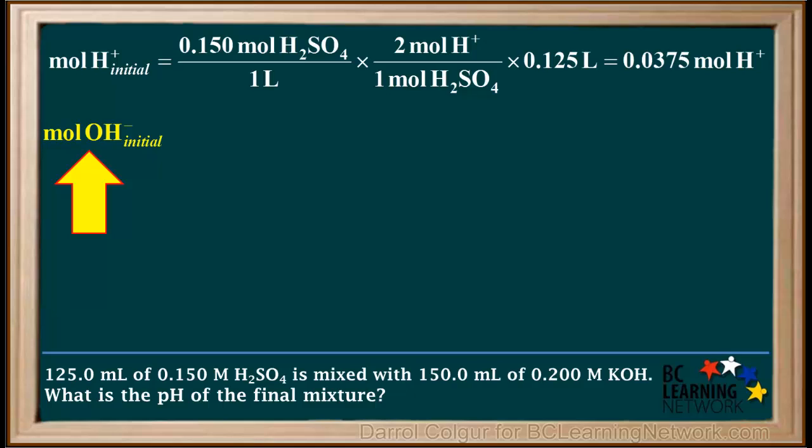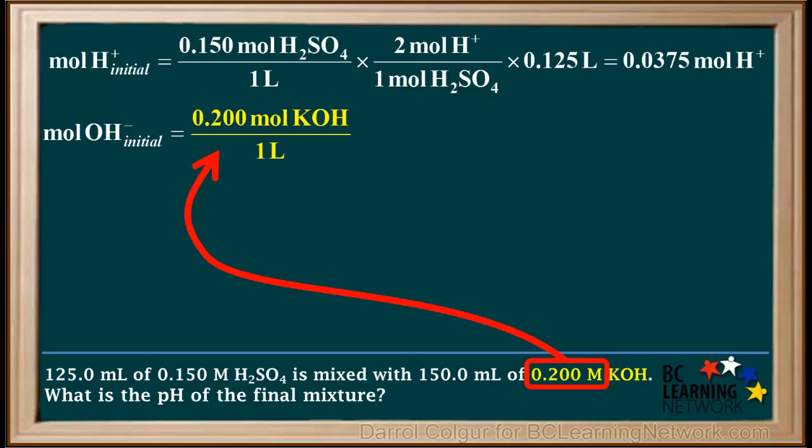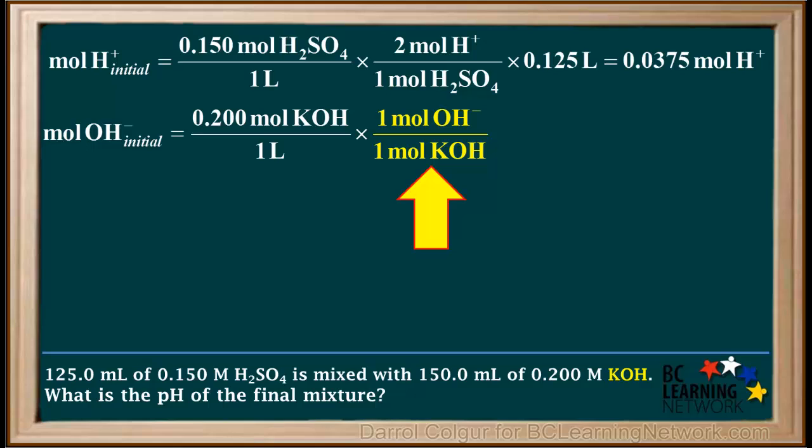Now we'll calculate the initial moles of OH minus added. It is equal to 0.200 moles of KOH per liter times 1 mole of OH minus to 1 mole of KOH times 0.150 liters, which comes out to 0.0300 moles of OH minus. We can see that the moles of KOH and liters both cancel. Notice we also have three significant figures and four decimal places in this answer.